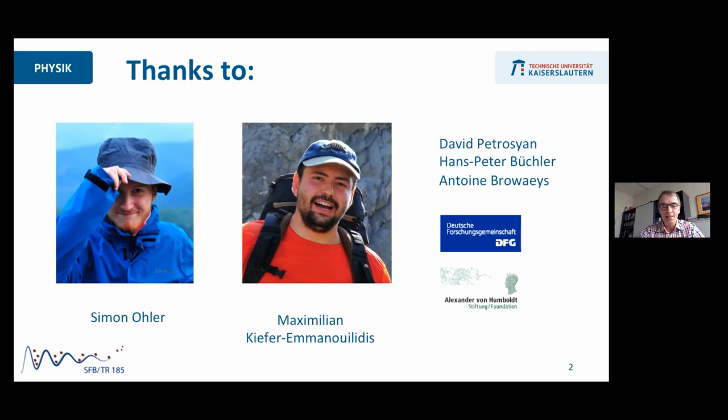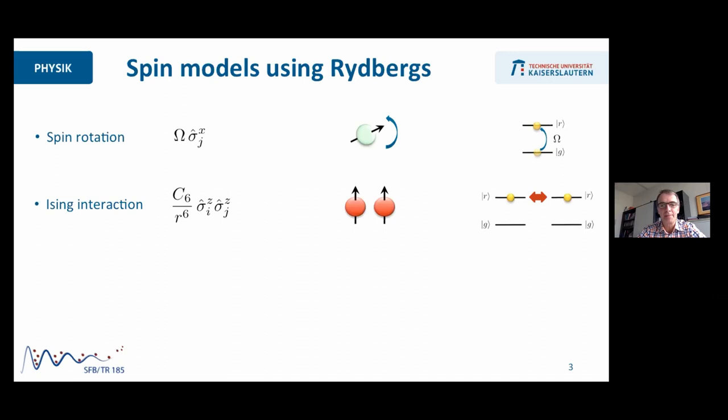As I said, Rydberg atoms are really perfect spins in the sense that by applying an external electromagnetic field, you can make all sorts of single spin rotations. The van der Waals interaction between two Rydberg atoms provides a perfect Ising type spin-spin coupling. This coupling is so strong that even if you put these atoms micrometers apart, the interaction strength is still quite sizable.